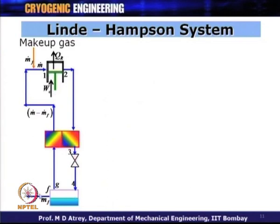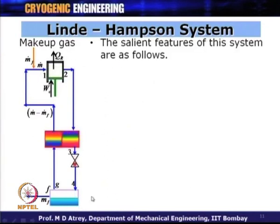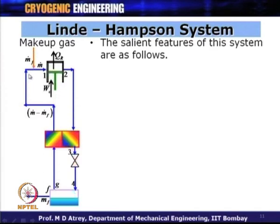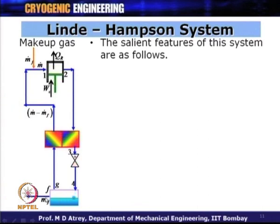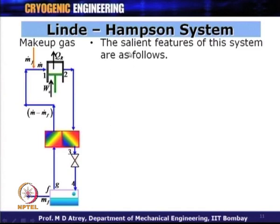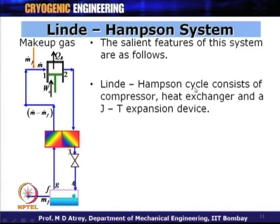With this background, let us come to the Linde-Hampson cycle, which is the first practical cycle taking us away from the ideal thermodynamic cycle. The schematic has a compressor, a heat exchanger, a JT valve, and a container. The gas goes back and is replenished. Compared to the ideal thermodynamic cycle, what has been added here is a heat exchanger. In the ideal cycle all compressed gas was liquefied; here only some gas is liquefied.